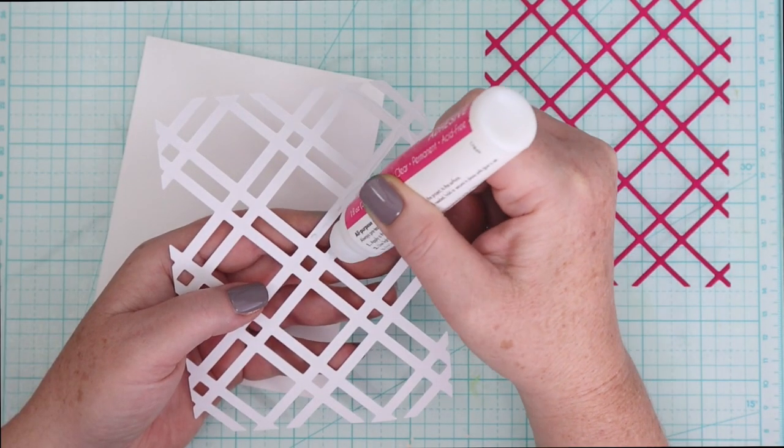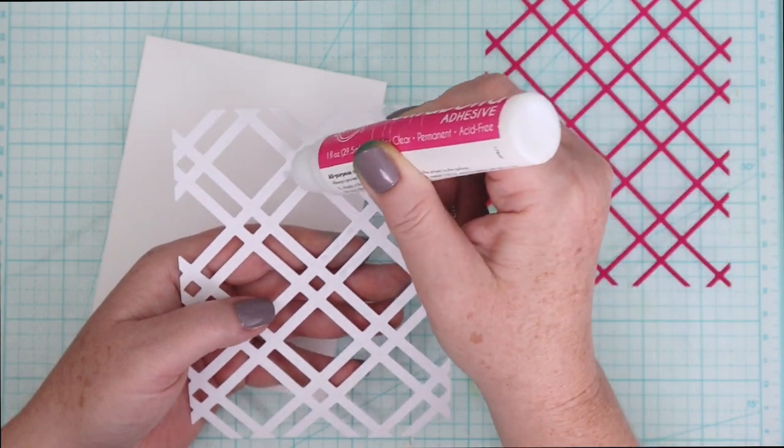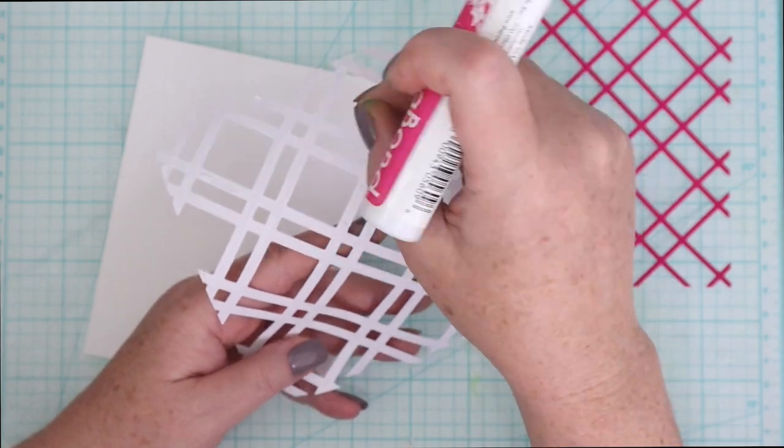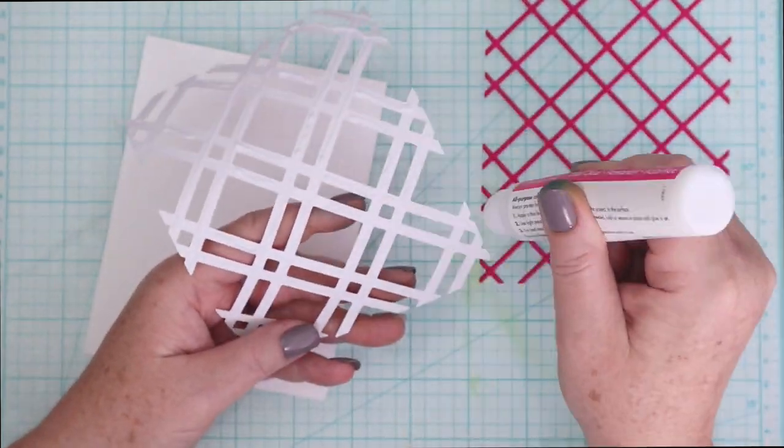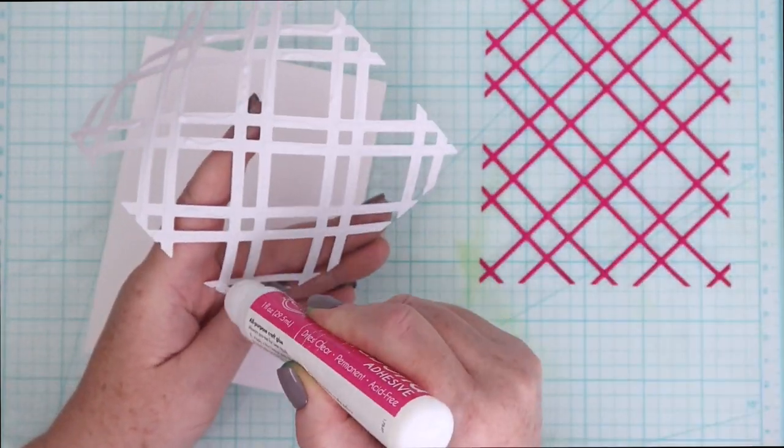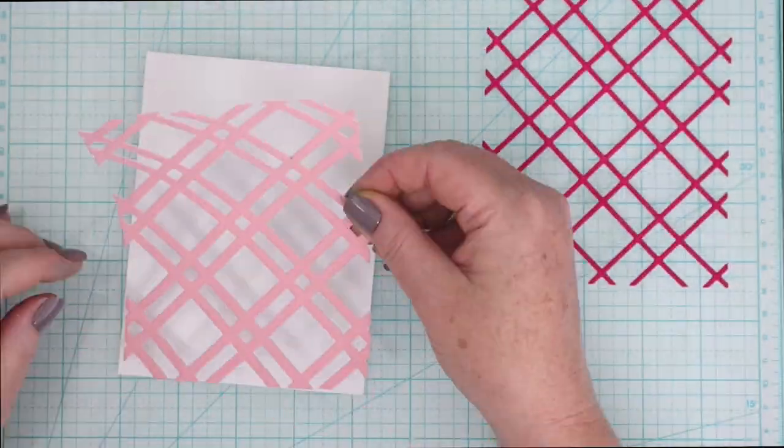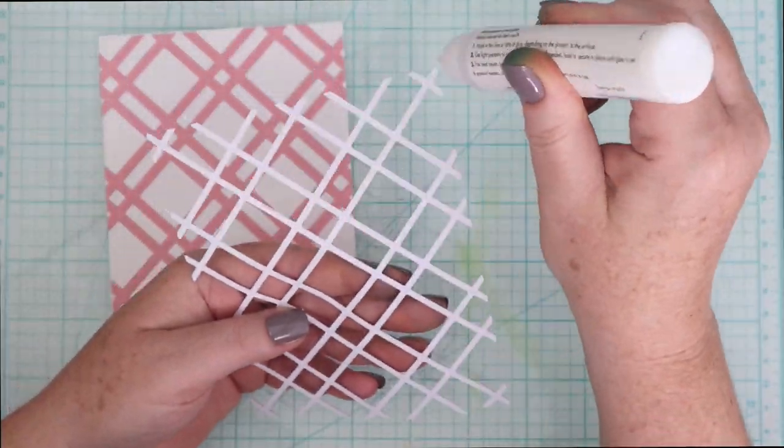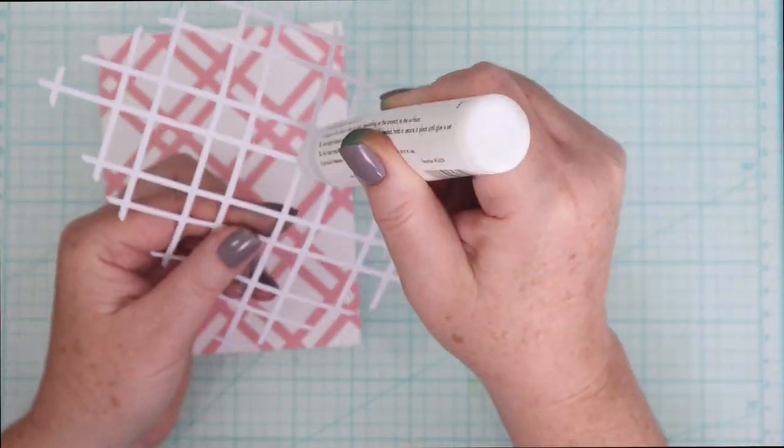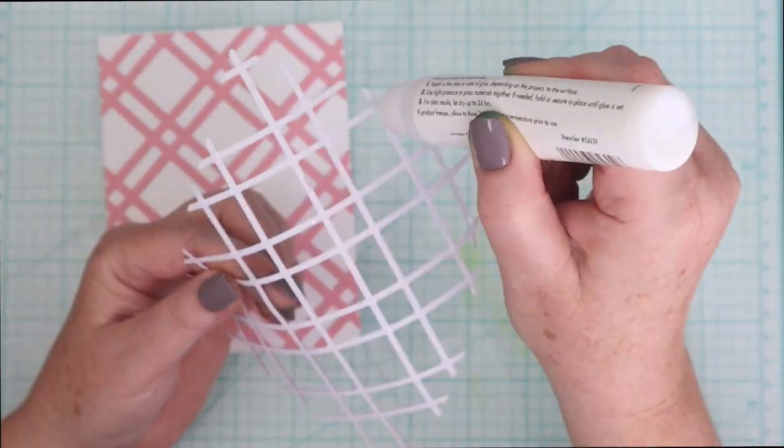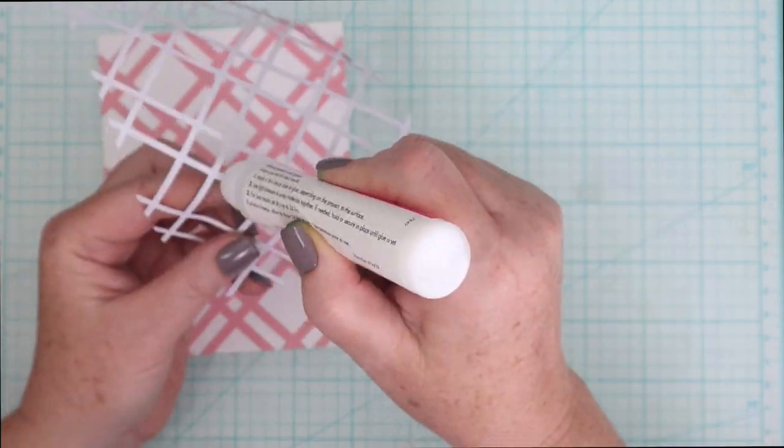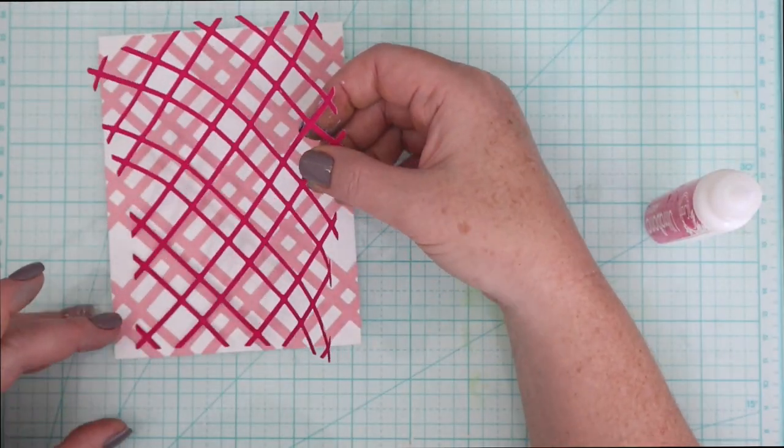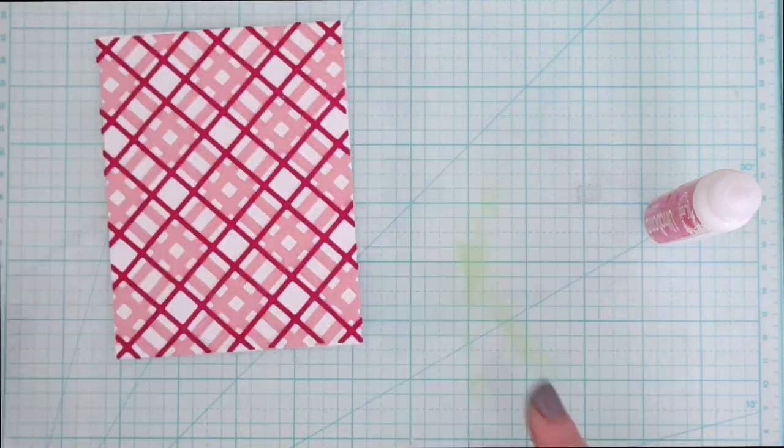In the last section, I used Tape Runner to adhere the transfer sheets down. Now I'm going to share how you can use liquid glue, and it works just fine. The paper is thin, but it's thick enough to withstand liquid glue on the back and use that to adhere the first plaid down to an A2 piece of white cardstock.